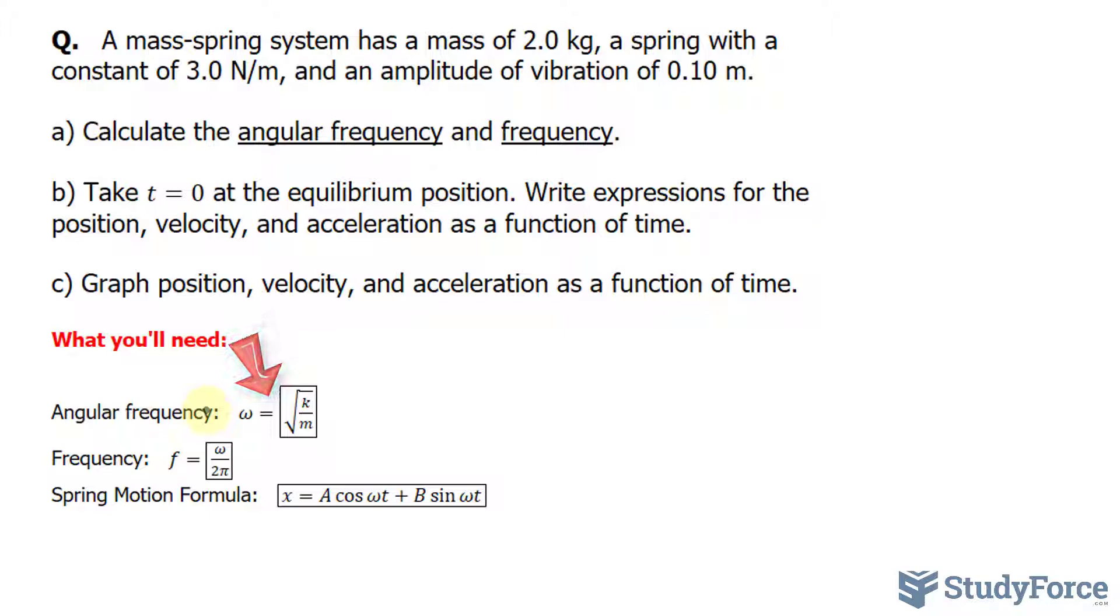The first one is for angular frequency, denoted by the Greek letter omega, and that's equal to K, which represents the spring constant. The spring constant has the units 3.0 newtons per meter. So I'll write down 3.0 newtons per meter divided by the mass, being 2.0 kilograms.